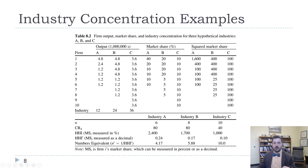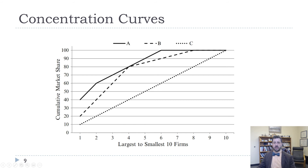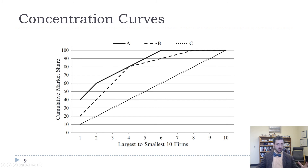In industry A, firm one has 40% market share, firm two has 20%, and the rest have 10% each. In industry B, the top four firms each have 20% market share, and the next four firms have only 5% each. In industry C, we have 10 firms each with 10% market share. The concentration curve takes the biggest to the smallest firms and graphs cumulative market share — you add up market share starting with the biggest, always reaching 100%. Industry A is above industry B, and they're both above industry C, so industry A is most concentrated, B less so, and C least concentrated.